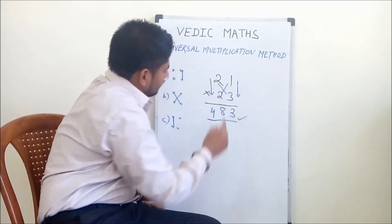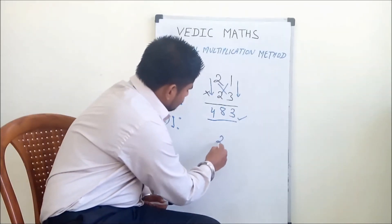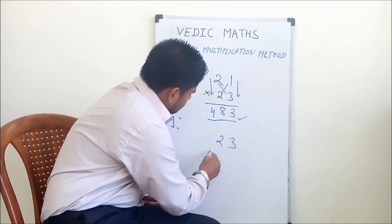And we get the answer in one line. Similarly, if we multiply 23 into 12.